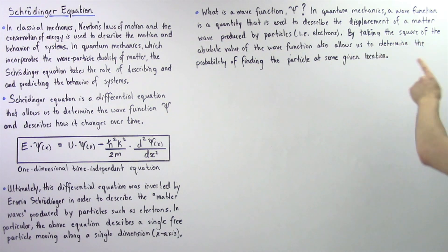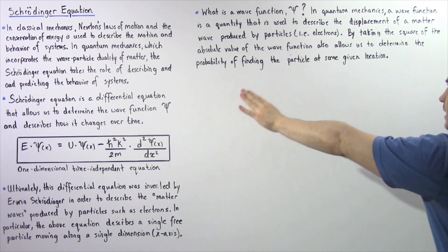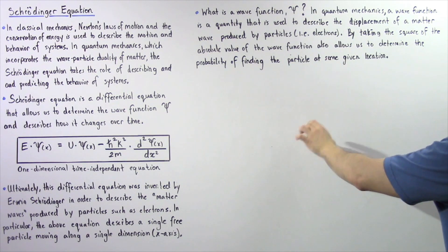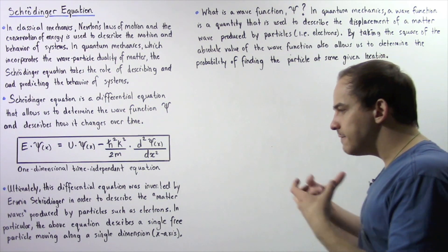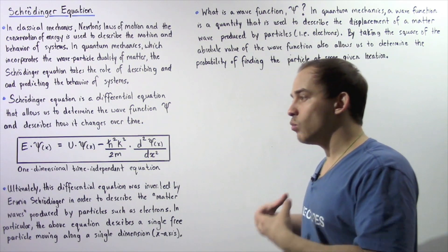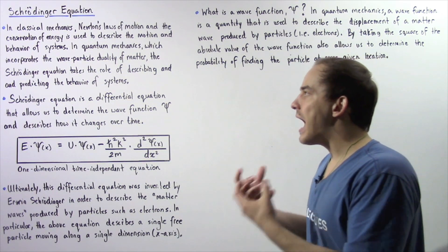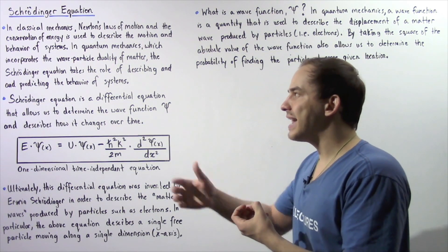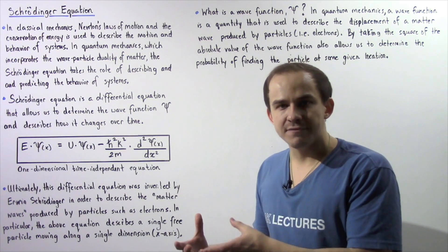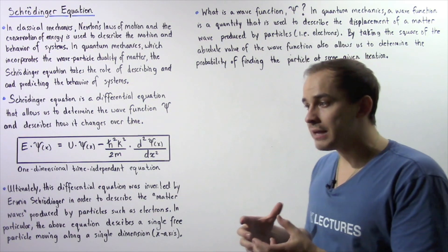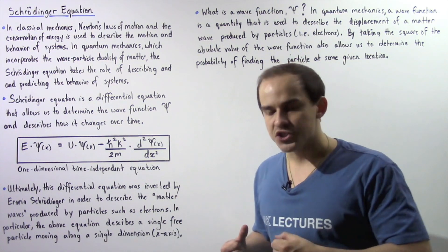Now by taking the square of the absolute value of the wave function, we can also determine the probability of finding the particle at some given moment in time. So the wave function is basically what describes how our system on the atomic and subatomic level behaves. The wave function describes the behavior of our electrons.